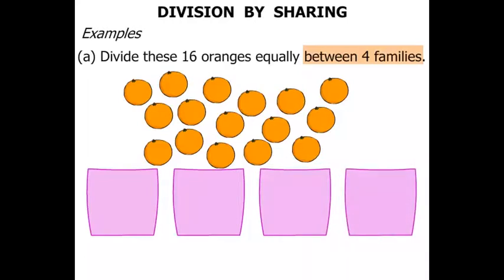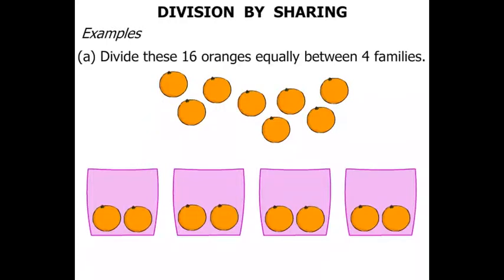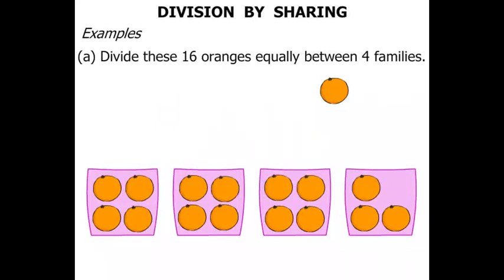It's simply a matter of moving the oranges into each of the baskets. Those 4 oranges are distributed between the 4 families. Again let's continue that, and we keep on doing that until finally all of the oranges have been split up.